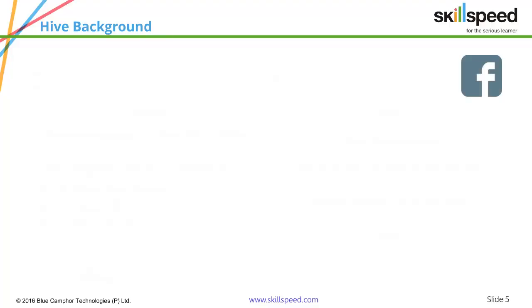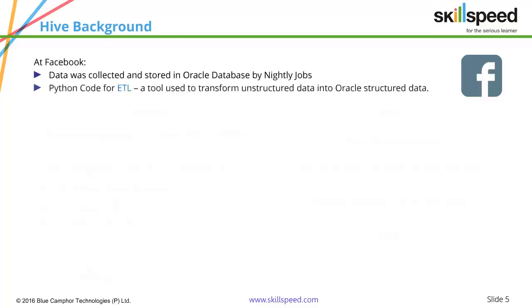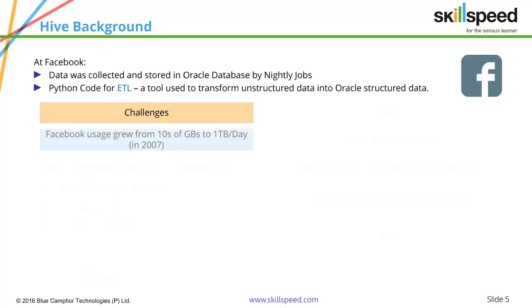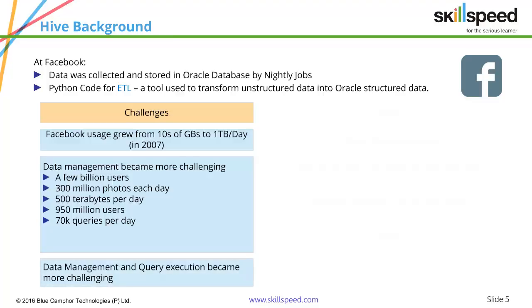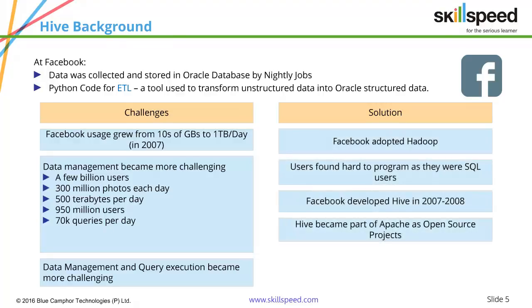Looking at this slide, you can see what Facebook was facing. They were collecting data stored in Oracle databases via nightly jobs, and using hand-coded Python or ETL to transform data. Their data grew from a couple of GBs to one terabyte per day in 2007, with more than 300 million photos each day and 70,000 queries needed on this massive data. Querying this data by writing MapReduce code was the problem, and the solution Facebook developed was called Hive.